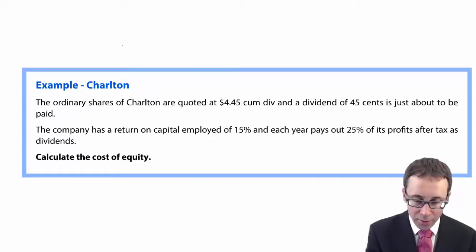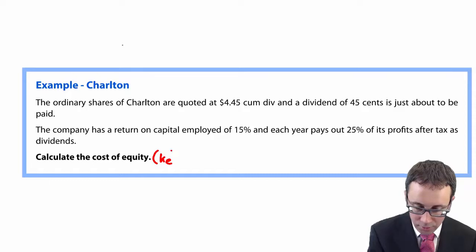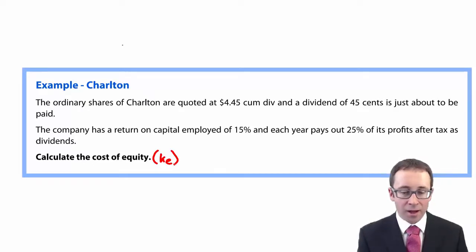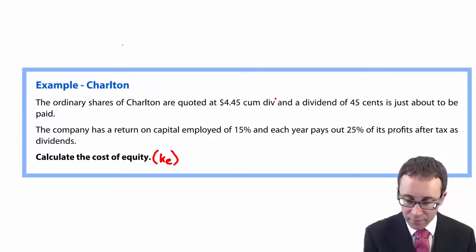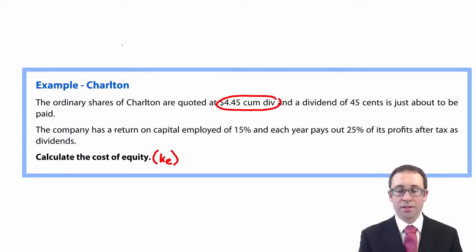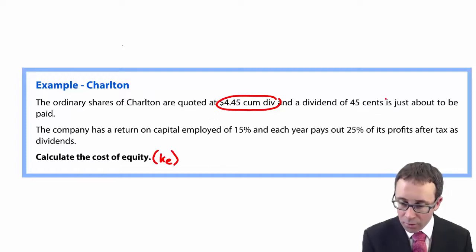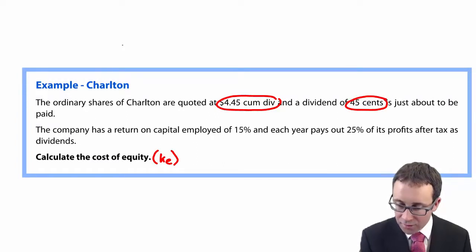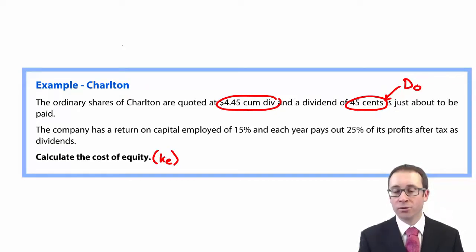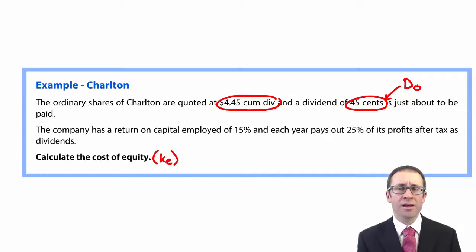What it wants us to do, like all the other examples, is work out the cost of equity, KE. The first thing to be careful of is that the share price given is cum-div, so when calculating the cost of equity we need to work it out as ex-div. We'll need to adjust for the dividend to get the ex-div price. We're told the dividend is 45 cents — that is D0. So if we subtract 45 cents from the cum-div price of $4.45, we get $3.95, which is the ex-div price.